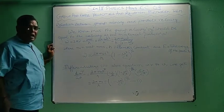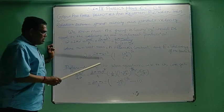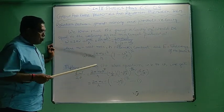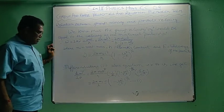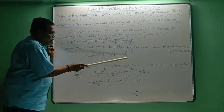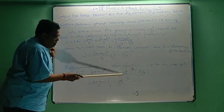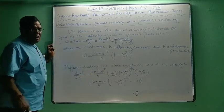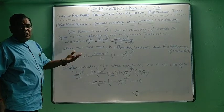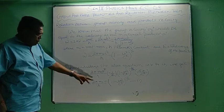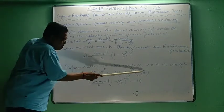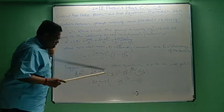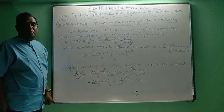Now we use calculus. Differentiating omega with respect to v, we get dω/dv = (2π·m₀·c²/h) · (−1/2) · (1 − v²/c²)^(−3/2) · (−2v/c²). After simplification — the 2s cancel, the c²s cancel — this gives dω/dv = (2π·m₀·v/h) · (1 − v²/c²)^(−3/2). Let this be equation 1.